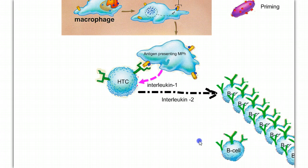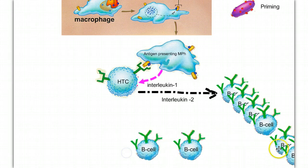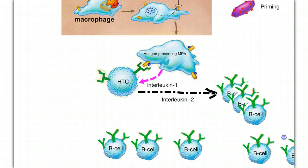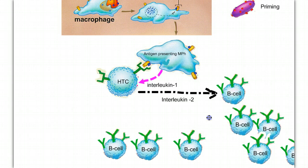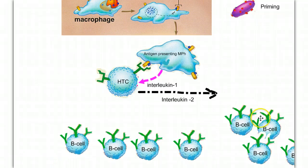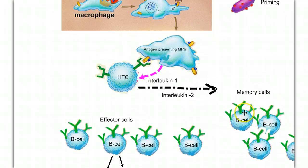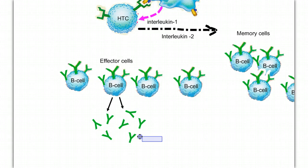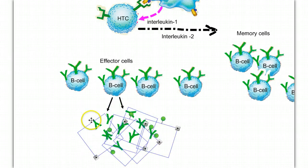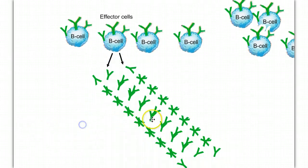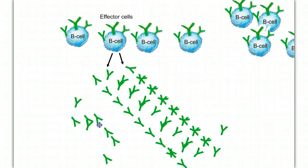This massive army of B cells is subdivided into two populations: a subpopulation of effector cells and a subpopulation of memory cells. The effector cells are going to start producing copious amounts of specifically shaped antibodies, while the memory cells are going to be held in reserve to deal with future exposures to the same pathogen.